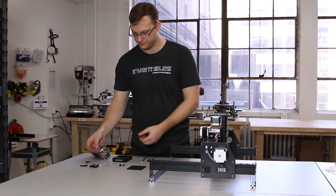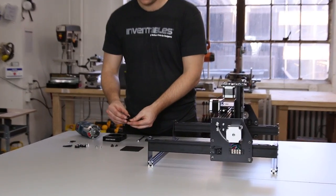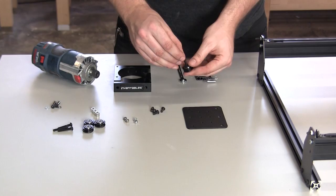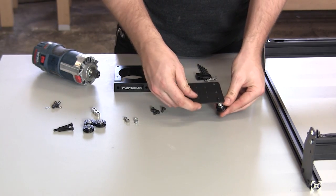Now you'll assemble your Bosch Colt spindle mount. Start by putting V-wheels onto the screws provided, followed by aluminum spacers.